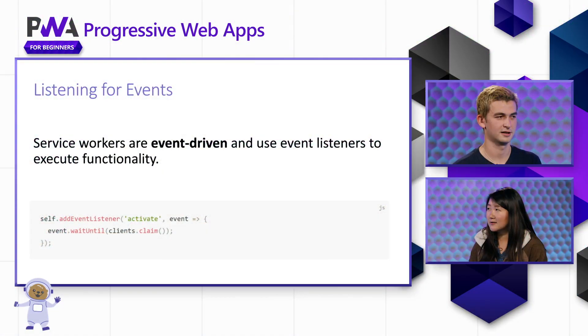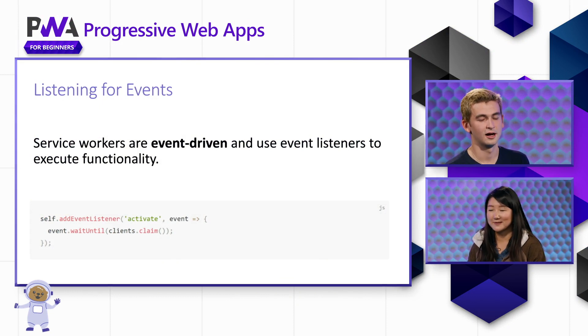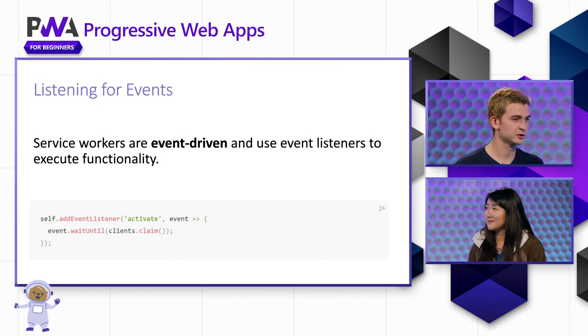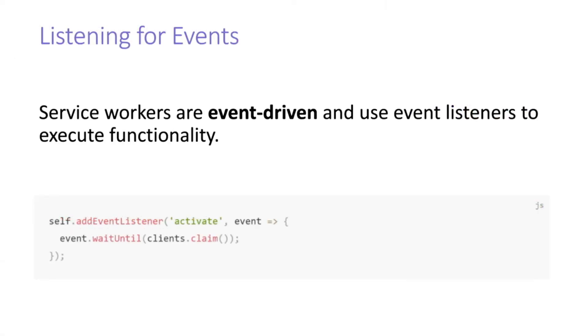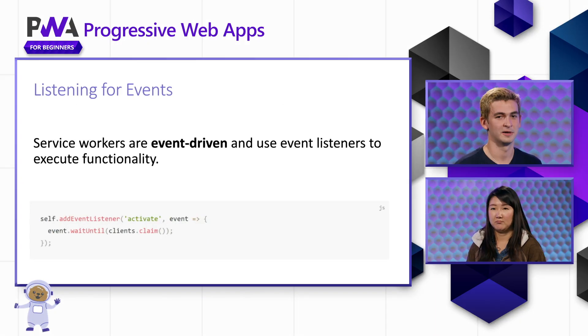Service workers are event driven and primarily use event listeners to execute functionality. We have an example of a listener in the snippet below where we make a call to the addEventListener function. We're listening to the activate event, which is one of our service worker lifecycle events, and we then pass in a function to handle that event. Almost all of our key service worker functionality is going to be implemented in this way — listen for events and then handle those events asynchronously.